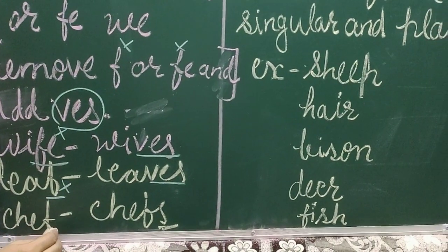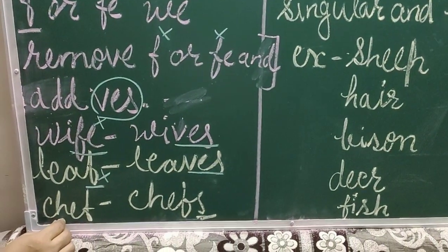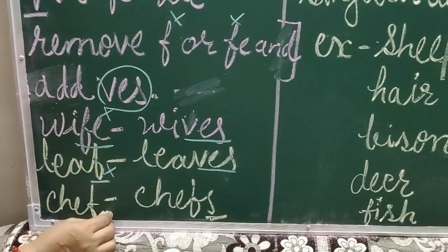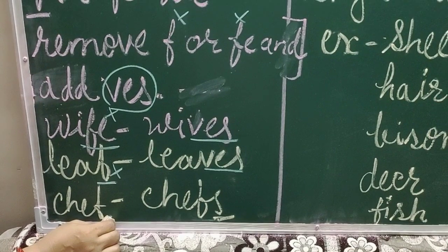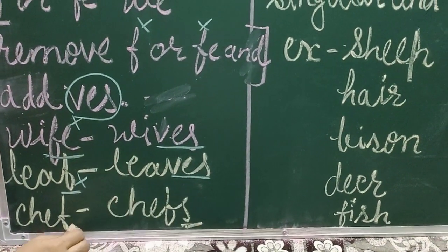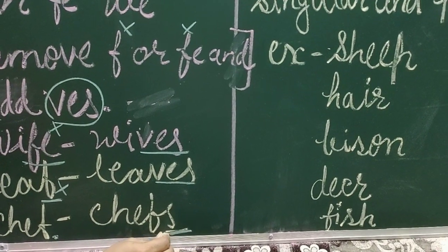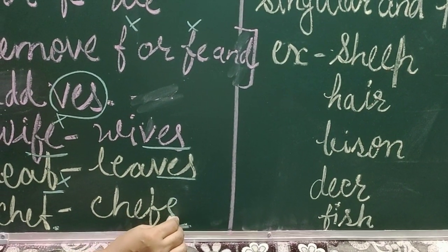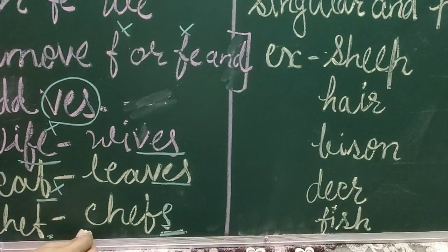But there are some exceptions. For example, chef — our word ends with F, but we do not add VES to make it plural. We add only S to make it plural, chefs. So there are some exceptions when making plural words from singular.